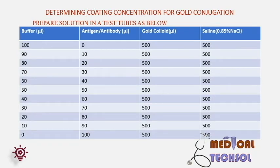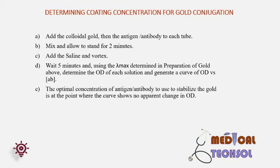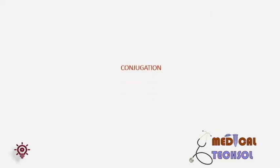To determine the coating concentration for gold conjugation, prepare solutions in test tubes as follows: Take 11 test tubes of 2 ml or more capacity. Add buffer and antigen or antibody as given in the table. Mix, then add colloidal gold to each tube. Mix and allow to stand for 2 minutes, then add saline and vortex. Wait 5 minutes. Using the lambda max determined earlier, measure the OD of each solution and generate a curve of OD versus antibody concentration. The optimal concentration is at the point where the curve shows no apparent change in OD.